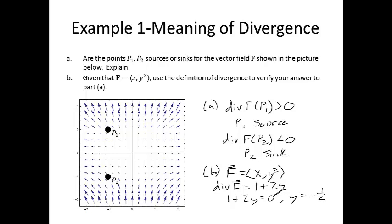Somewhere in here, at y equals negative 1 half, the vectors going into these points are the same length as the vectors coming out. Now, if y is greater than negative 1 half, then divergence of f is greater than 0, and you have sources, so p1 would be a source.